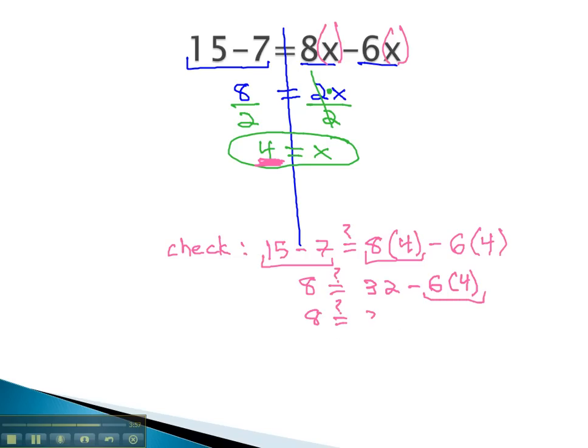Still multiplying left to right, 6 times 4 is 24. And when we subtract, do we get 8? 32 minus 24 is 8. It checks. That tells us the answer we found, x equals 4, is the correct answer.